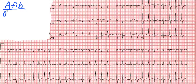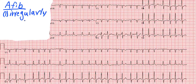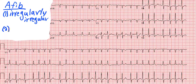What this leads to on the 12-lead EKG is, number one, an irregularly irregular rhythm. That is the first part of the definition. It's not just irregular — it's irregularly irregular, because you're getting those atrial depolarizations through the AV node at random times, and then your second and third depolarizations also at random times.